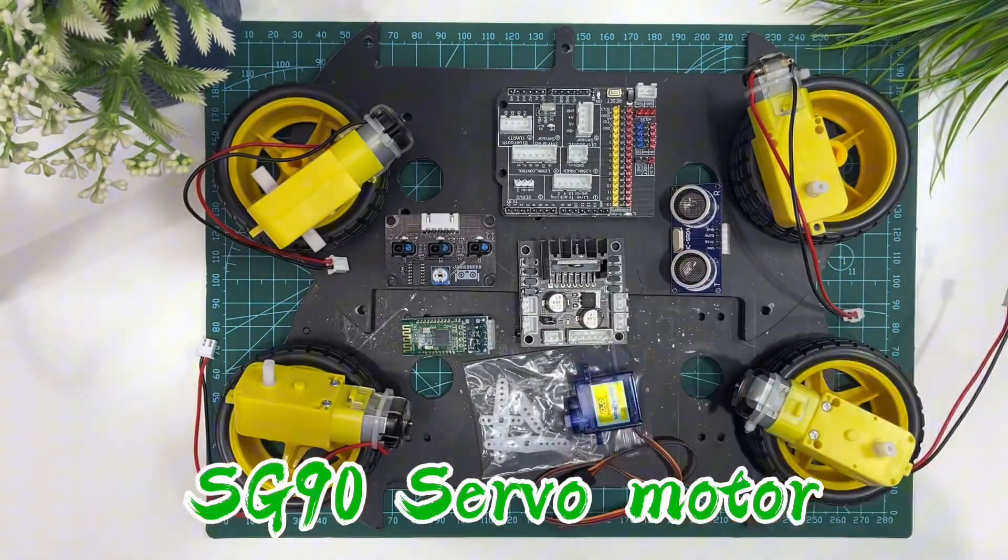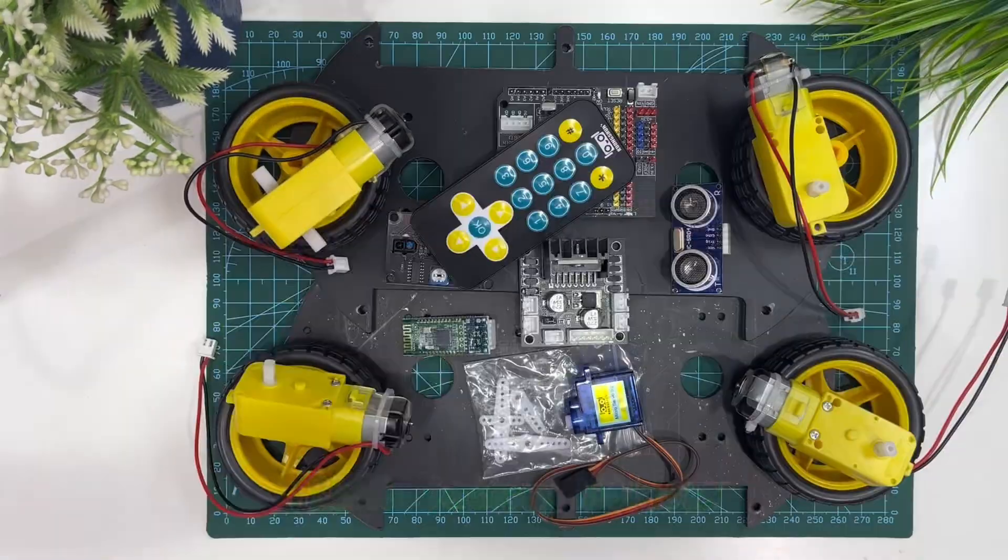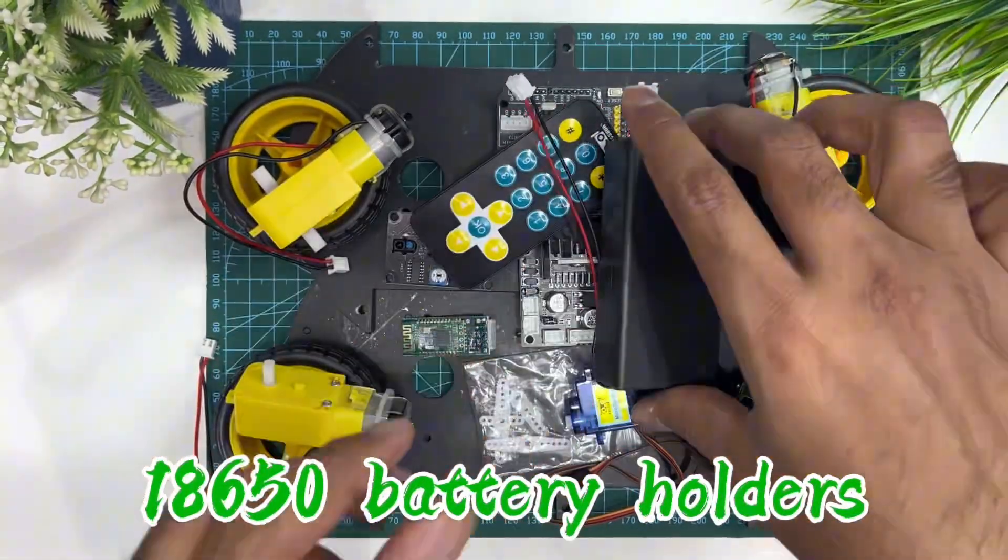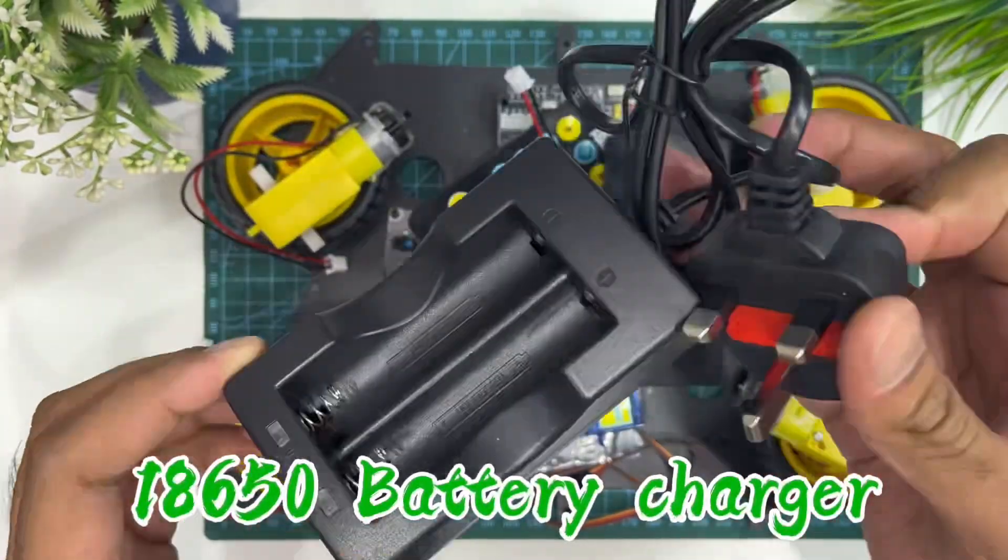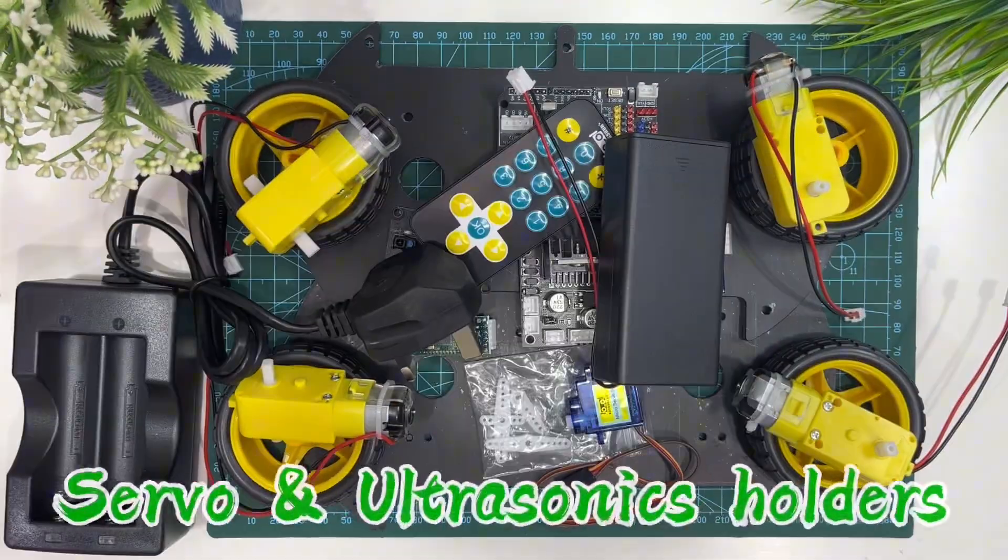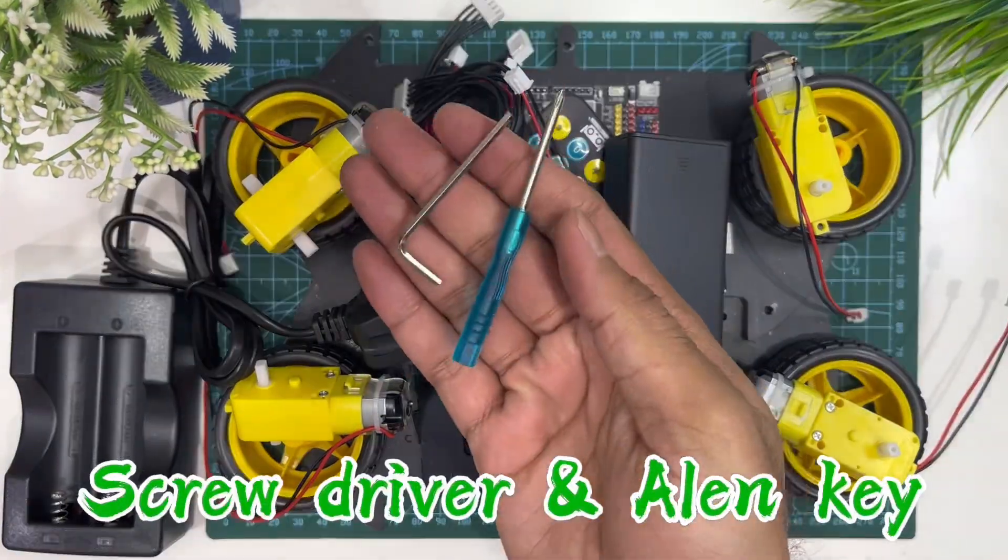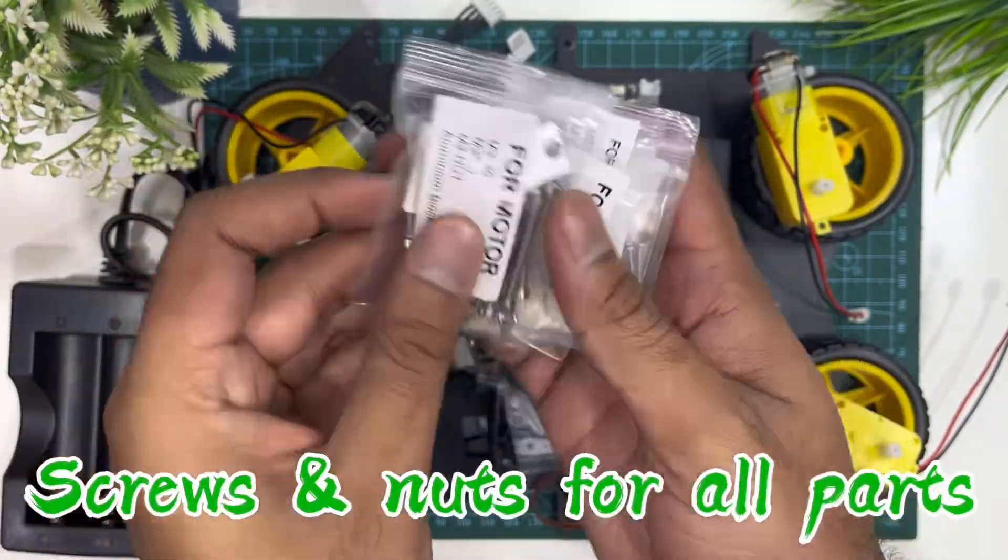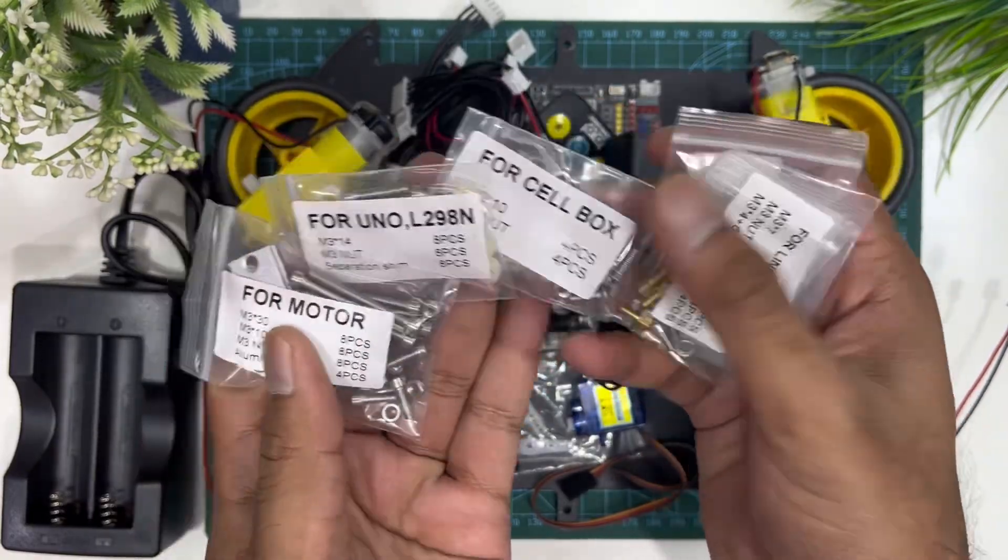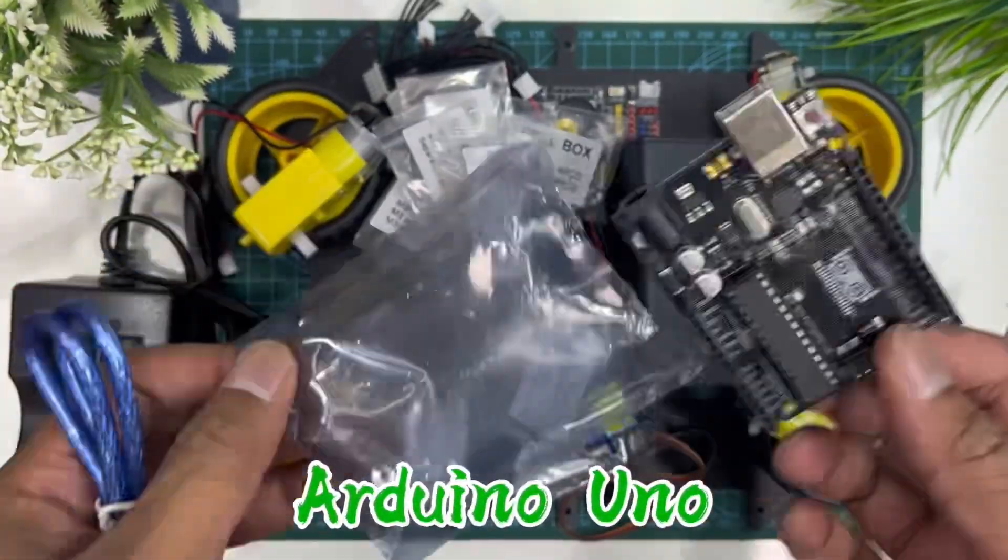SG90 servo motor, IR remote, 18650 battery holders for two cells, 18650 battery charger, servo and ultrasonic holders, connection cables, screwdriver and allen key, screws and nuts for all parts, and the most important Arduino Uno.